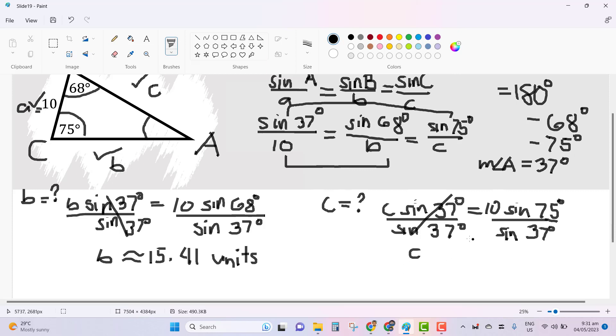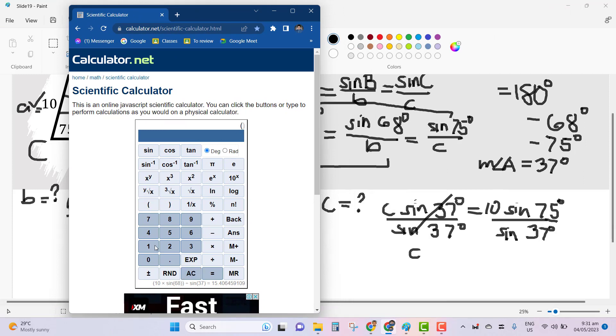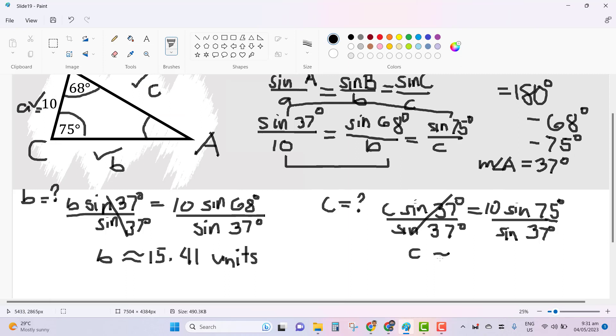So C can be computed as this entire expression. Calculator again, parenthesis, 10 sine 75, close, divided by sine 37 degrees. Push equals sign. You will get a result of 16.05, and so forth, for approximately 16.05 units.